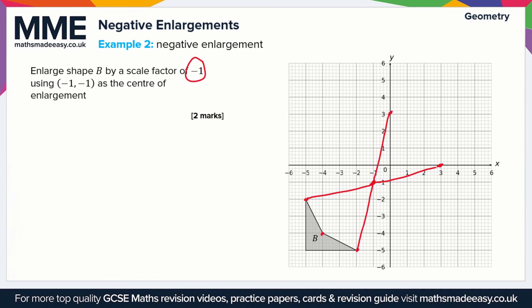For this point, we go three across and three up, then three across and three up again to plot the new position. The last point is four across and four up to the center of enlargement, which maps to the corresponding position on the other side. The complete new shape ends up here.